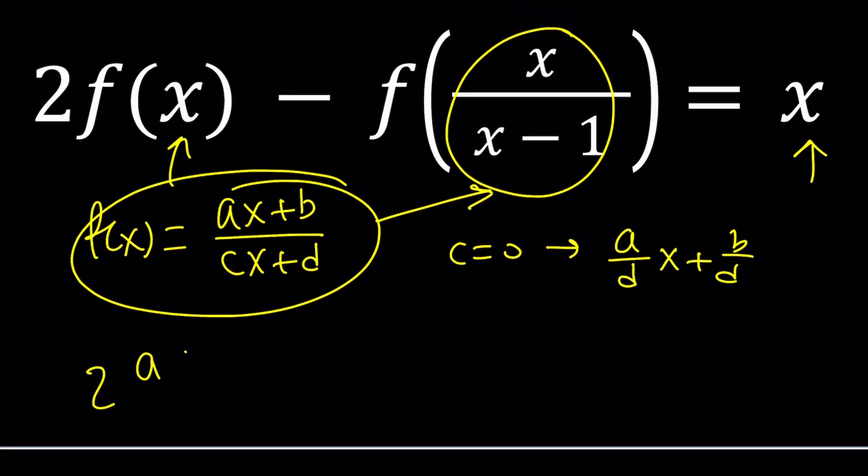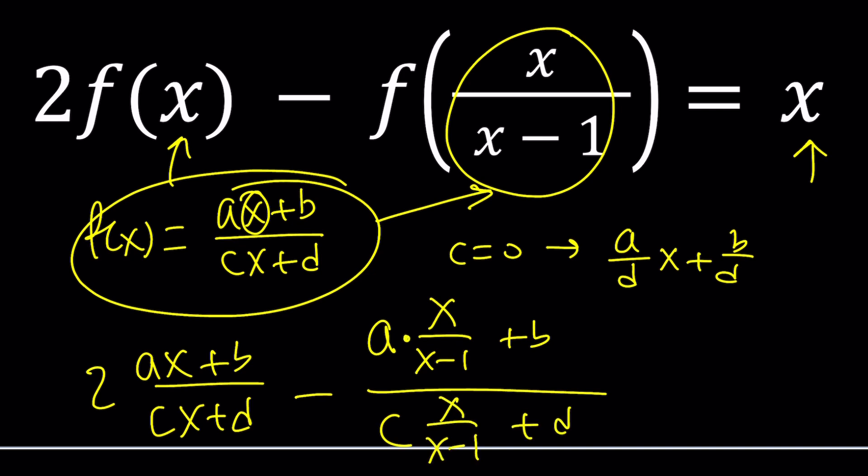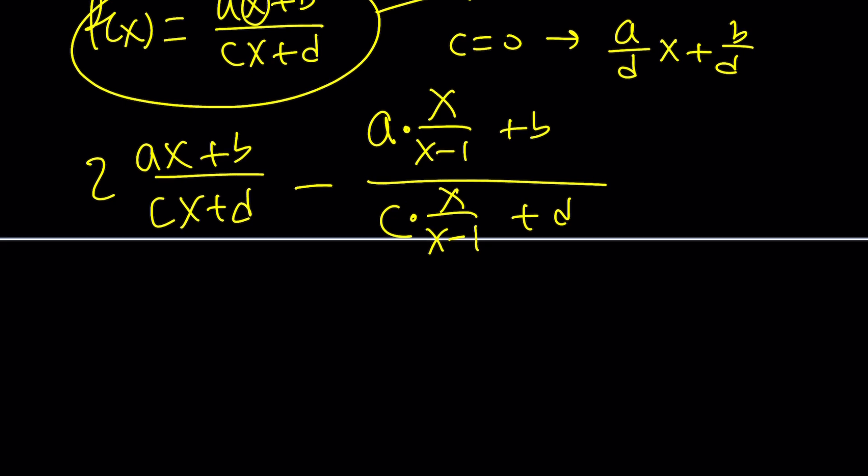Replace f of x with that and then in the second expression you must replace the x in f of x with x over x minus 1. So it's going to look like this: a times x over x minus 1 plus b divided by c times x over x minus 1 plus d. Of course there's multiplication signs over there and if you multiply the top and the bottom by x minus 1 and of course this is equal to x, the denominators are going to cancel out and you're going to get something like this.